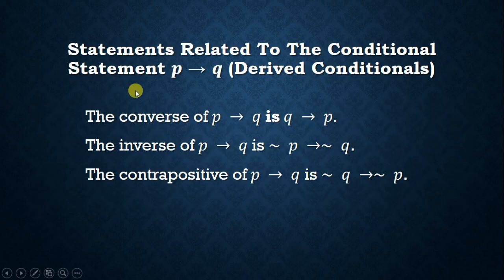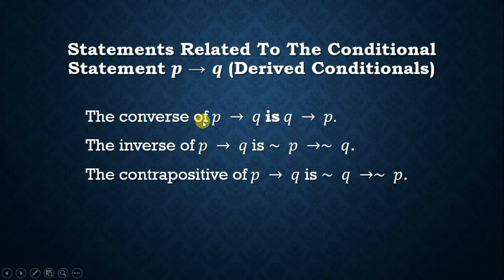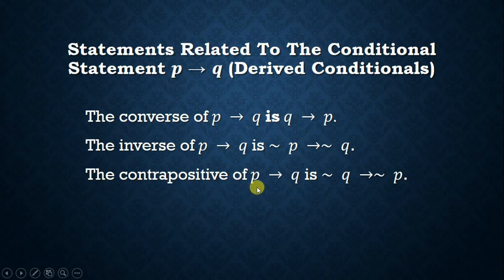Next, the statements related to the conditional statement P implies Q are called derived conditionals. The converse of P implies Q is Q implies P. The inverse of P implies Q is not-P implies not-Q. And the contrapositive of P implies Q is not-Q implies not-P.